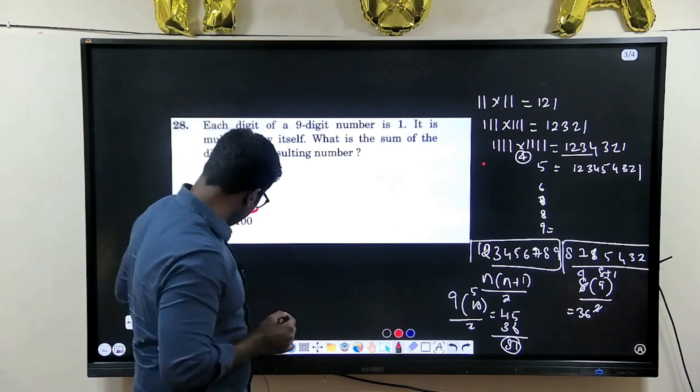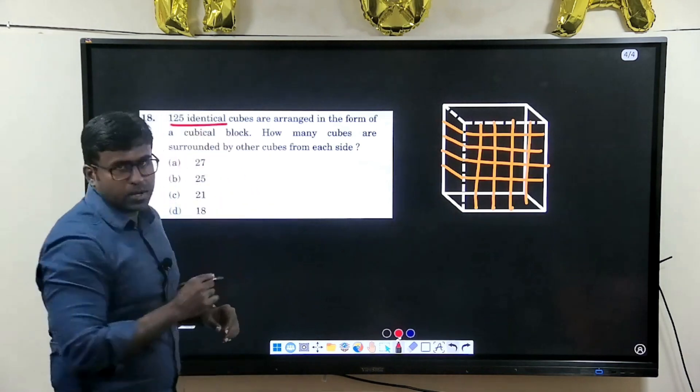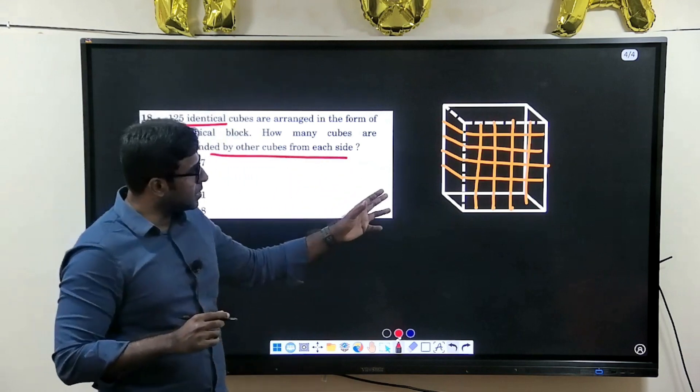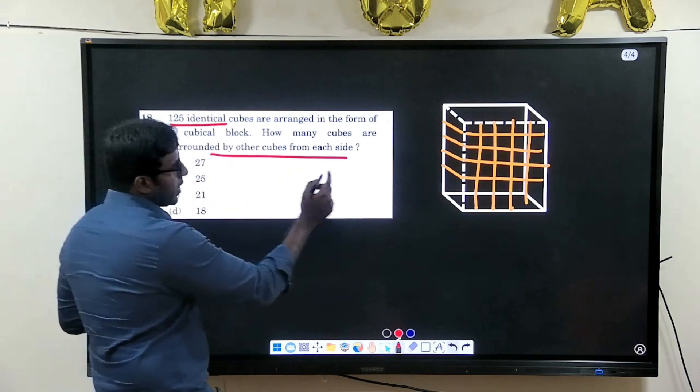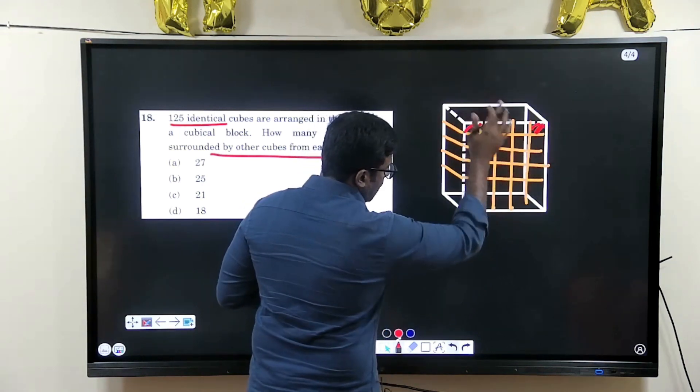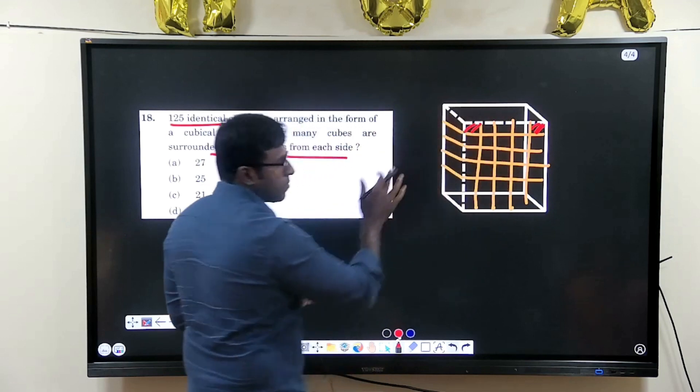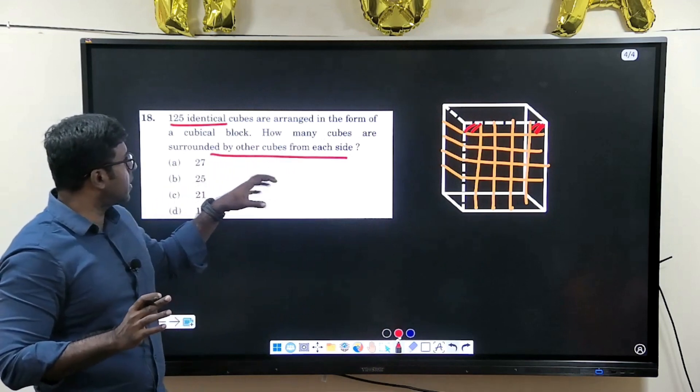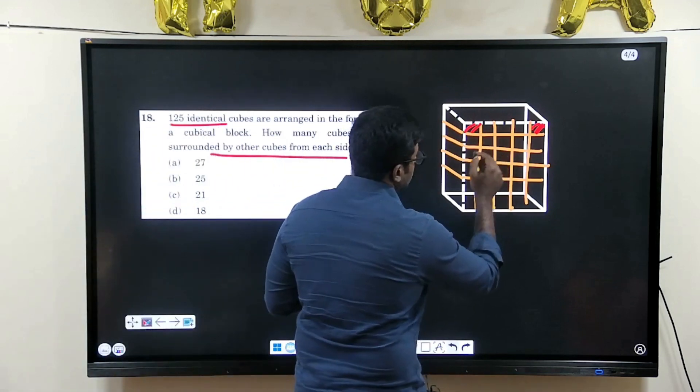Next we will go to one more question which is a cube sum. See, it is a formula based 125 identical cubes are given. How do you solve this? It is a formula based thing but when you understand it, you will actually solve it even a little bit easier. 5 cubes are there. See, look at this, this cube, this cube and, you know, complete, if you see complete, this whole structure will have an overlapped thing. What they say is that how many cubes are surrounded by other cubes from each side? From all the sides, what will be the cubes which will be surrounded is that?